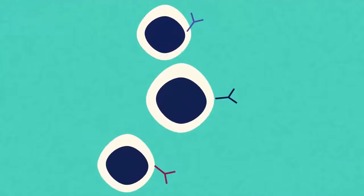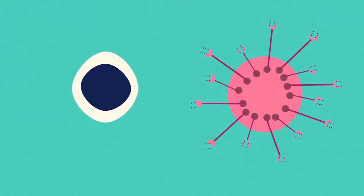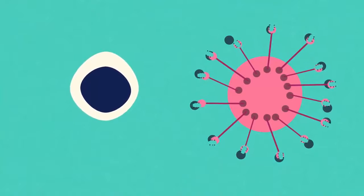Each antibody is very specific. It will only attack one type of bacteria. Other lymphocytes produce anti-toxins which combine with the invader's toxins and make them harmless.